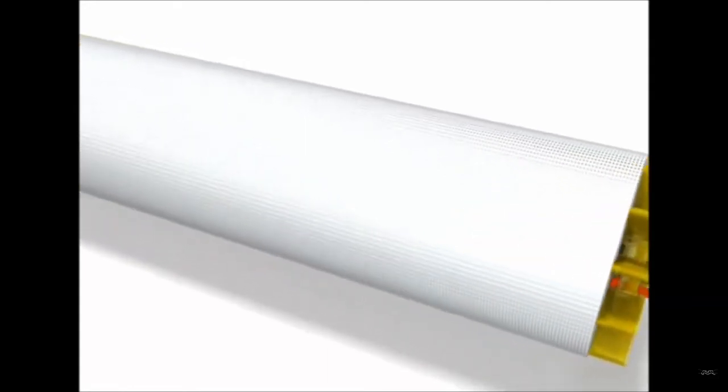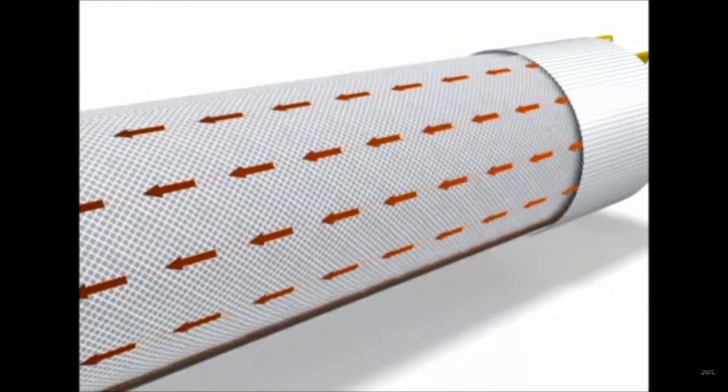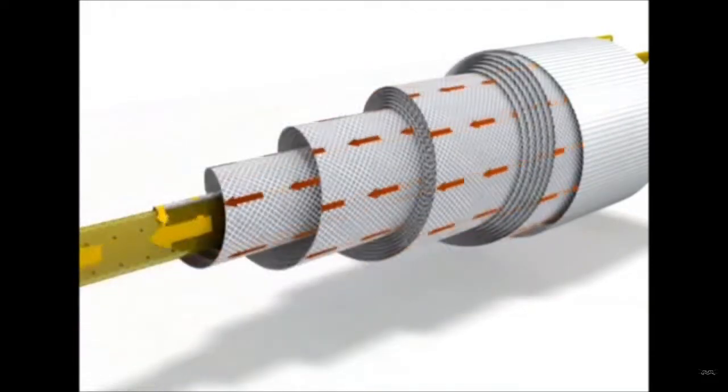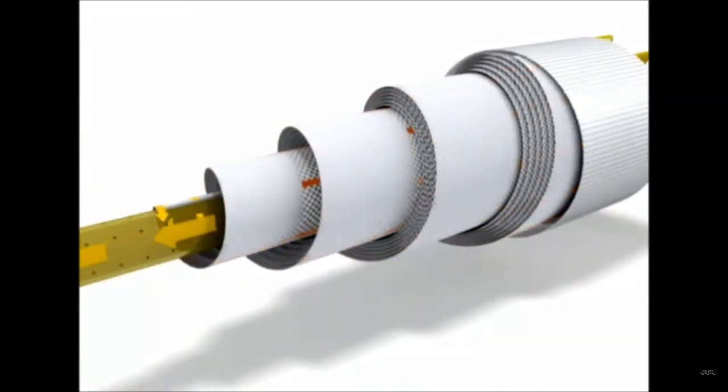As the feed travels down the spiral it becomes more concentrated, illustrated by the increasingly deep red color of the arrows. This concentration effect is due to the fact that the transmembrane pressure—that is, the difference in pressure between the feed and the permeate side—induces a flow of permeate through the membrane layer.